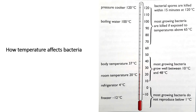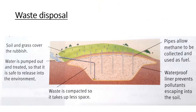Above those temperatures — like boiling water or a pressure cooker above 100°C — bacteria are killed immediately due to high temperatures. This is waste disposal, also called sewage treatment. It is part of disease and immunity because bad sewage treatment can lead to diseases such as cholera, or the water we consume becomes unhealthy. Soil and grass cover the rubbish, water is pumped and treated before being safely released into the environment. Waste is compacted to take up less space, pipes allow gas to be collected and used as fuel, and a waterproof liner prevents pollutants from escaping into the soil.